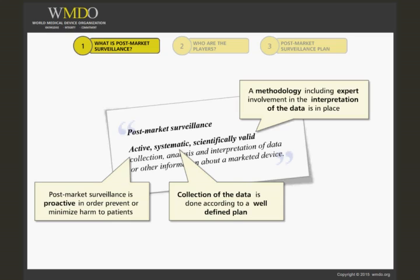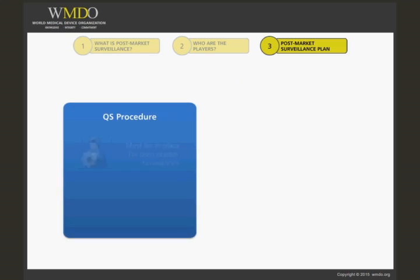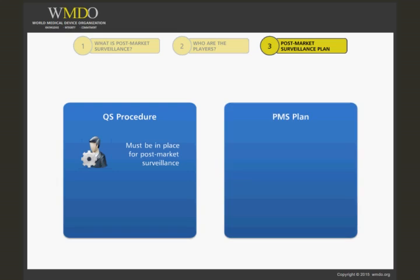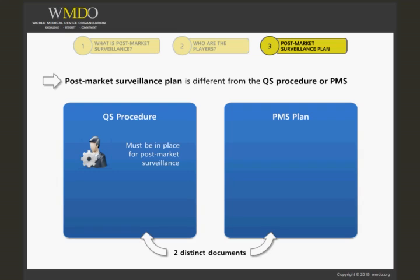For post-market surveillance, manufacturers are obliged to have a quality procedure in place in their company. This is not the post-market surveillance plan as such, since the plan is specific to the product and does not describe how operations in a company related to post-market surveillance should function. So the QS, or quality system procedure, and the post-market surveillance plan (PMS) are two distinct documents in your company, but both are needed.